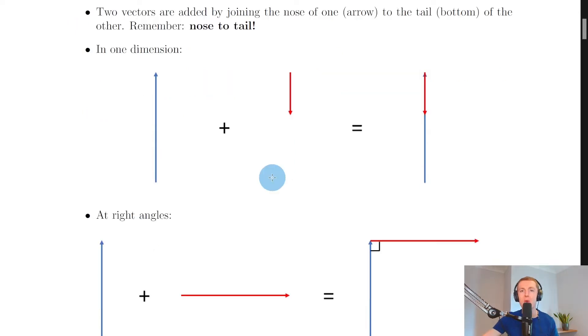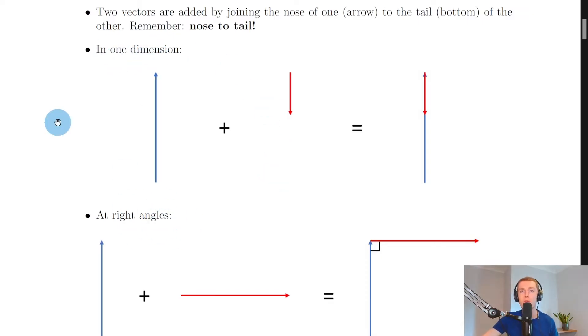We're going to look at the two main cases at National Five level, which is when we add vectors in one dimension and at right angles. First of all, it's worth noting that we represent vectors on a page by lines with arrowheads on them.